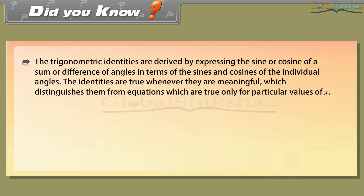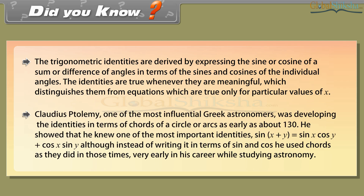Did you know? The trigonometric identities are derived by expressing the sine or cosine of a sum or difference of angles in terms of the sines and cosines of the individual angles. The identities are true whenever they are meaningful, which distinguishes them from equations which are true only for particular values of x. Claudius Ptolemy, one of the most influential Greek astronomers, was developing the identities in terms of chords of a circle or arcs as early as about 130 AD. He showed that he knew one of the most important identities: sin(x+y) is equal to sin x · cos y plus cos x · sin y, although instead of writing it in terms of sin and cos, he used chords as they did in those times.